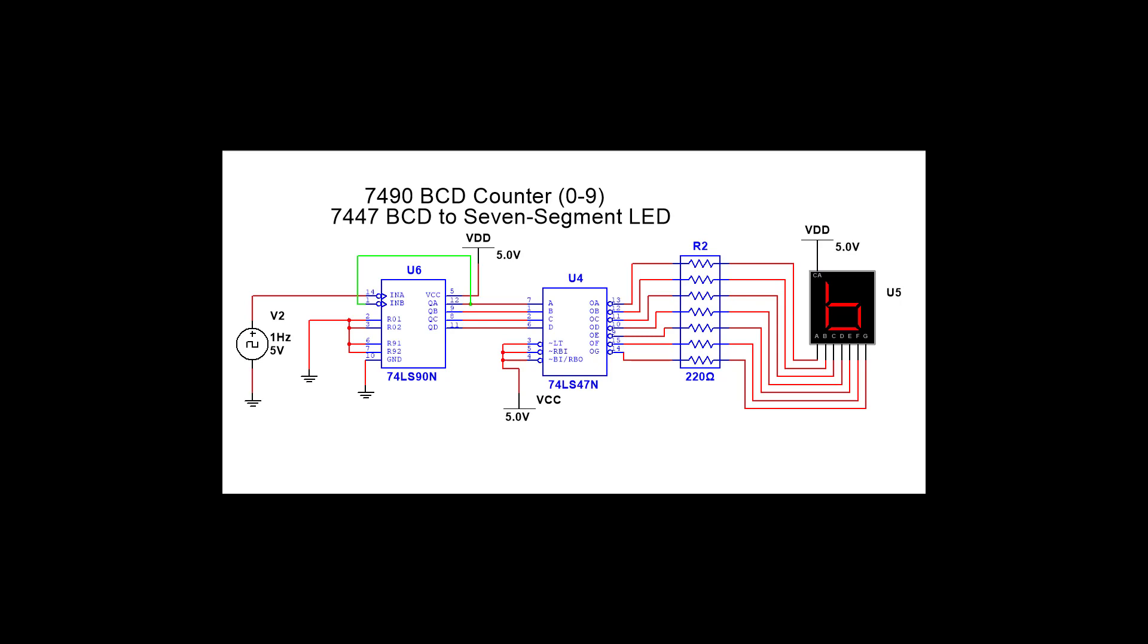Here we have the 7490 driving the 7447. This one's set up in the BCD mode, this one's decoding it. All the master sets and resets are in a position where they'll operate normally. And when we turn it on, we are getting a count of 0 to 9.